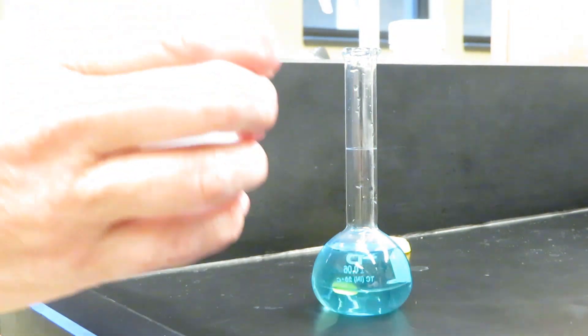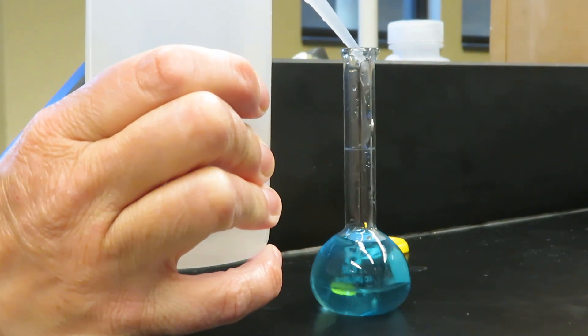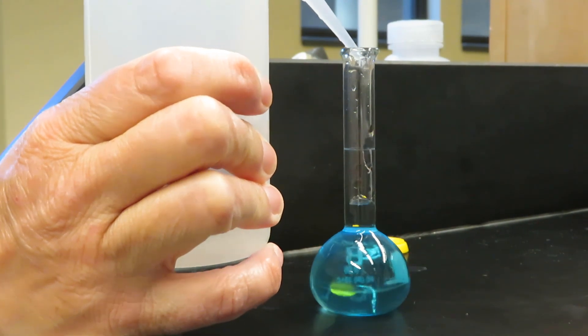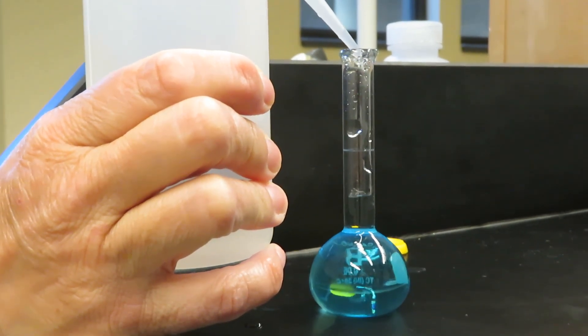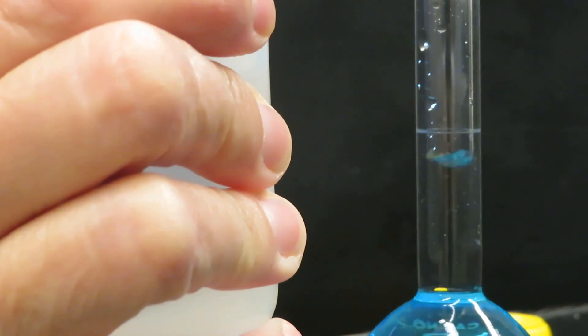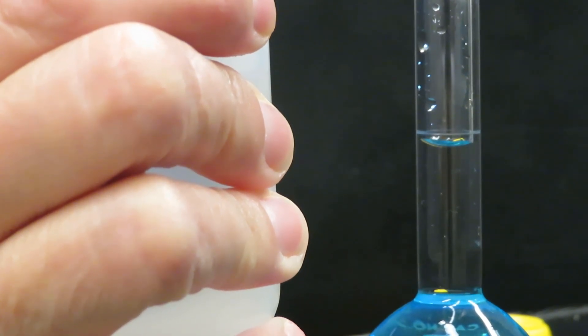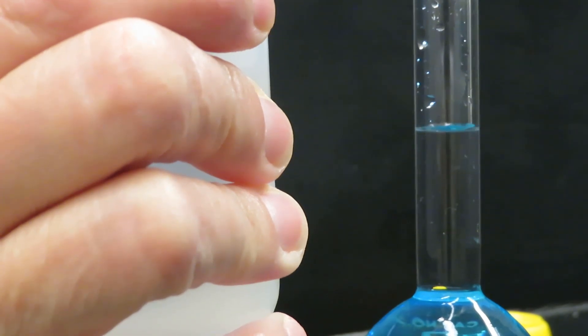Now I'll add more slowly and then drop-wise as I approach the 25-milliliter mark. You can see the bottom of the meniscus is right on the 25-milliliter line.